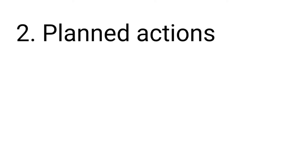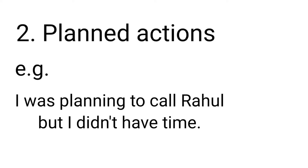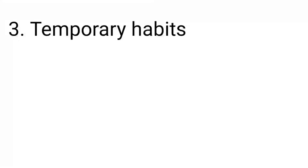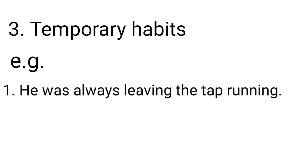Second use: planned actions. For example: I was planning to call Rahul but I didn't have time. Third use: temporary habits or habits that happened more often than expected in the past. We often use 'always,' 'constantly,' or 'forever' here. This is similar to how we use the present continuous for habits, but the habit started and finished in the past. For example: He was always leaving the tap running. She was constantly singing.